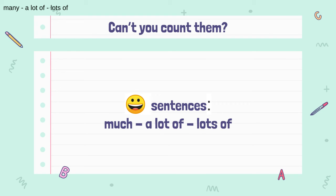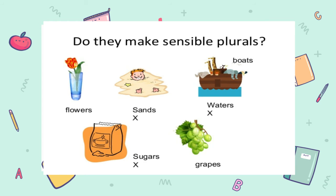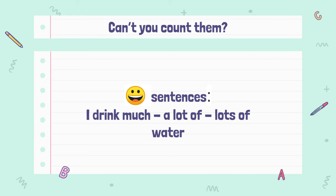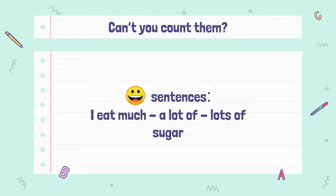If you can't count them and you have a positive sentence, you use much, a lot of, or lots of. So: I see much sand. I see a lot of water. I eat lots of sugar. Or much sugar — all are correct, also in your test.